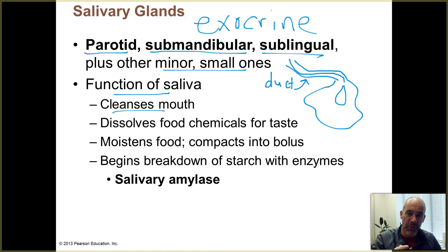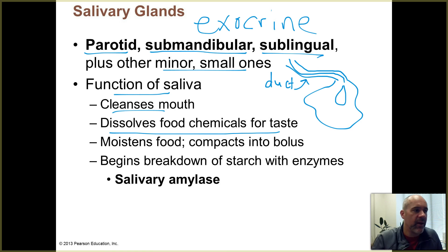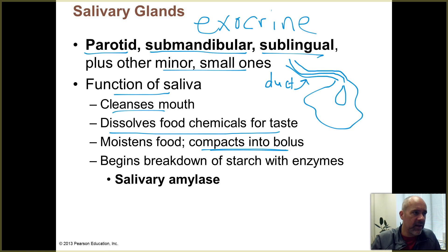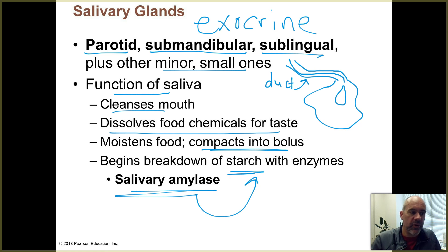What are the functions of saliva? It helps cleanse your mouth. It helps dissolve the chemicals in your food so that you can taste them with your taste buds. It helps moisten your food — if you've ever swallowed dry food without sufficiently moistening it, that's not too much fun. It also helps compact food into a bolus, which is a wad of chewed food that you swallow down through your esophagus. And the saliva contains salivary amylase, which starts breaking apart starches — chains of glucose sugars — into absorbable glucose molecules.